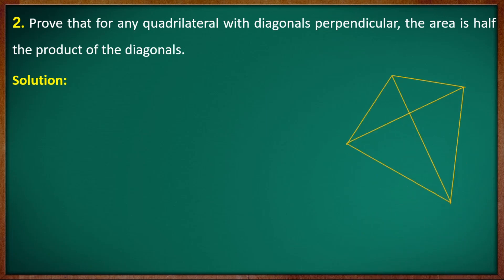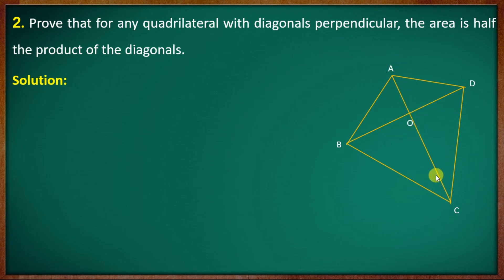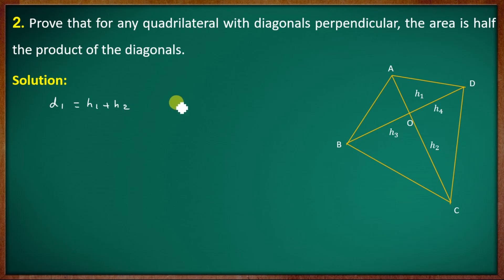If you have a quadrilateral with vertices A, B, C, D, and diagonal points B, O, O, D, A, O, O, C. We label heights H1, H2 for diagonal D1, and H3, H4 for diagonal D2. H1 plus H2 corresponds to D1, and H3 plus H4 corresponds to D2.